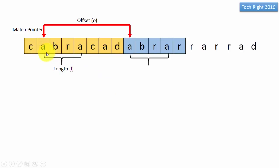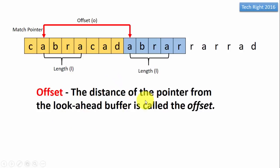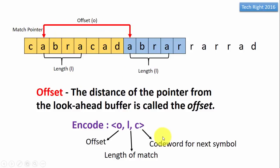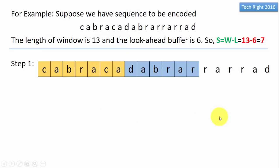The length of the match is called L. For example, A B R A matches A B R A giving a match length of 4 characters. The offset is the distance of the pointer from the look-ahead buffer. We encode the sequence as a codeword in the format (O, L, C), where O is the offset, L is the length of match, and C is the code for the next symbol.